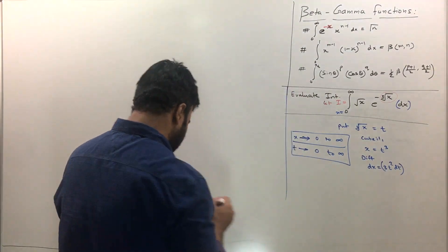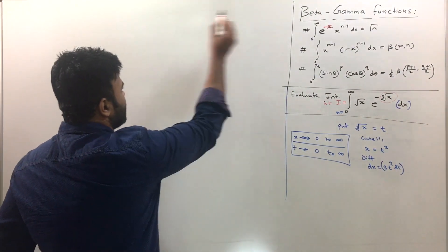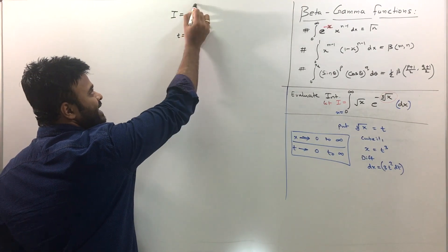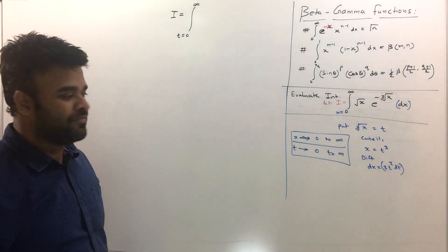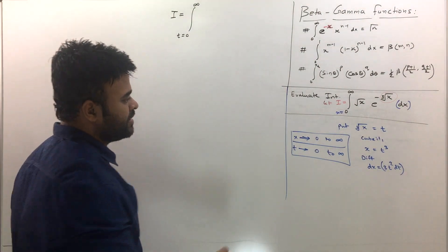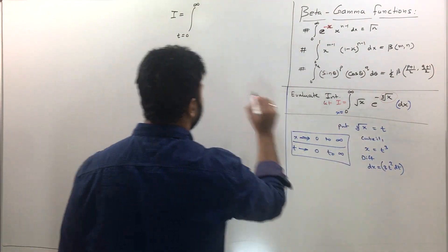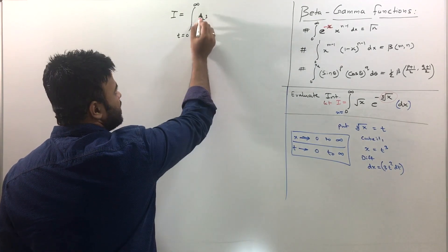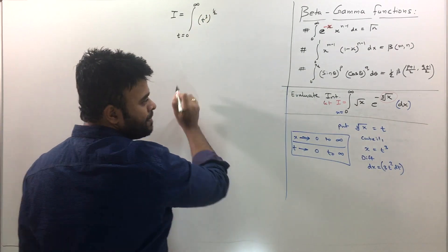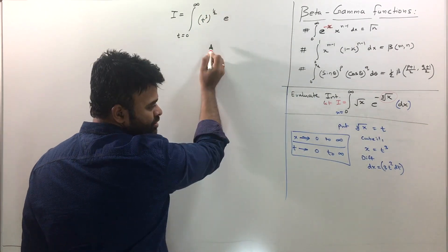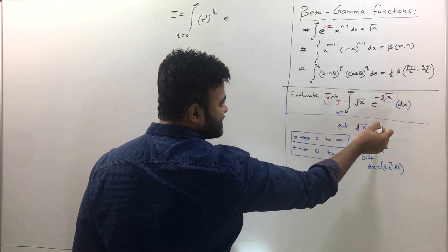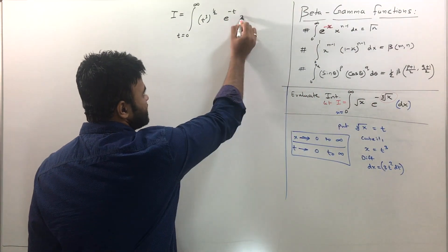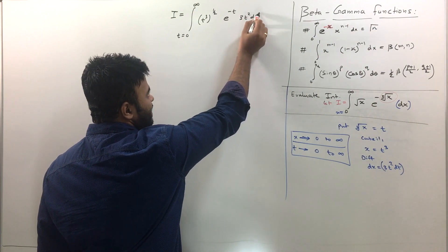So now let me replace those values and see what I get as i. So the integral i now will become integration limits will be of t. They will go from 0 to infinity. And let's put x is equal to t cube. So it is x is equal to t cube raised to half. And then this is e raised to cube root of x. The value of cube root of x is just t. So e raised to minus t. And dx becomes 3t square dt. That's the value for dx.